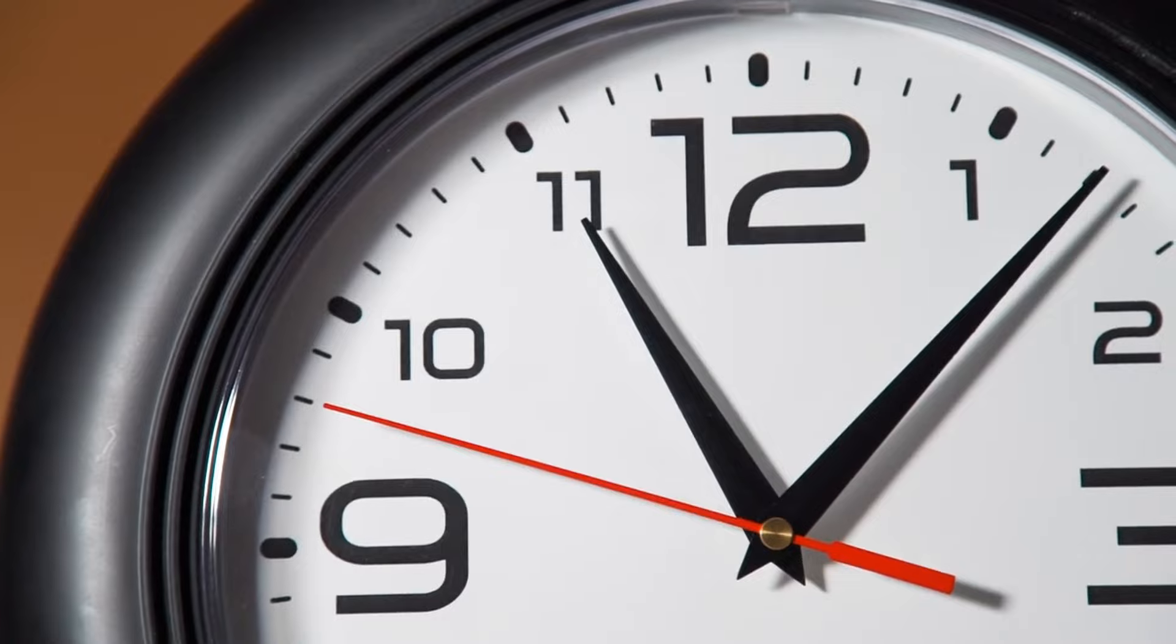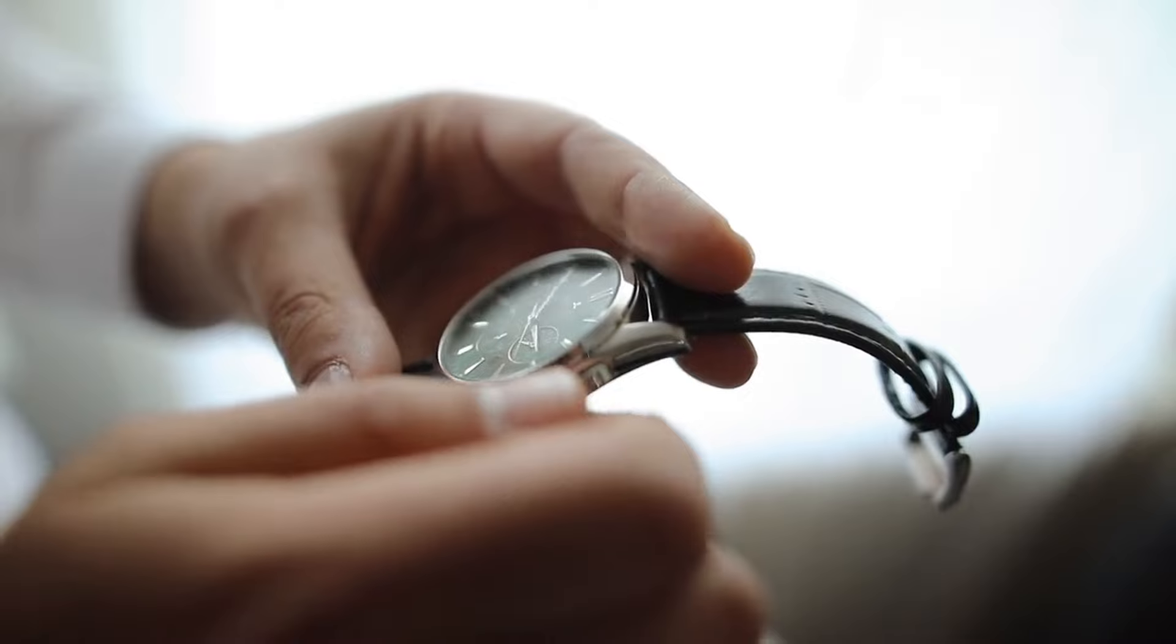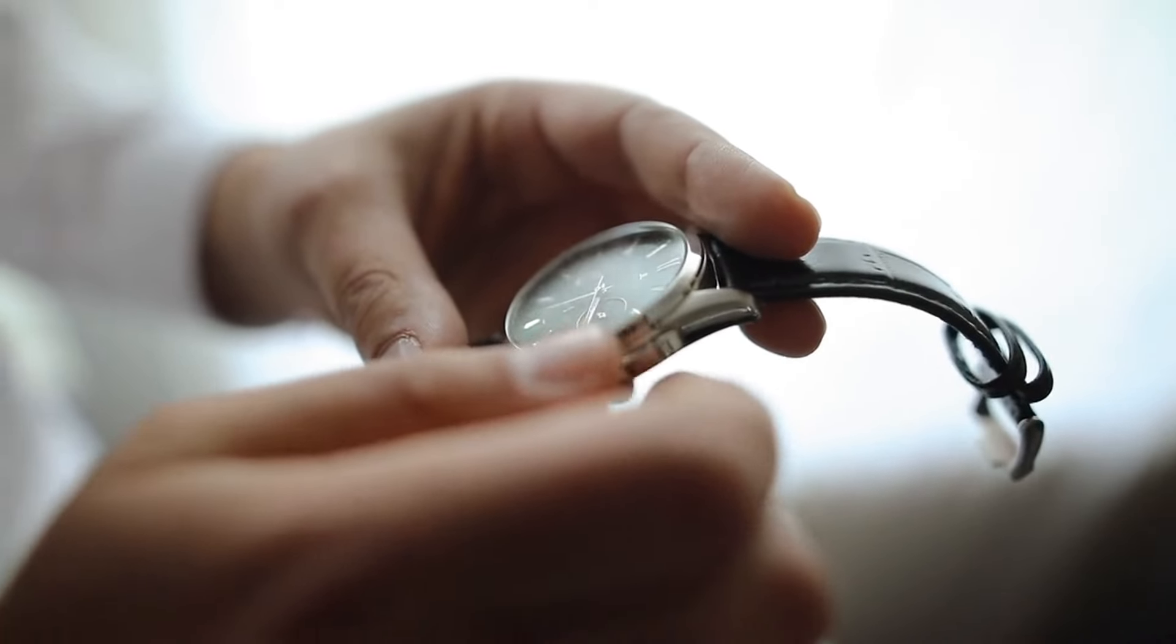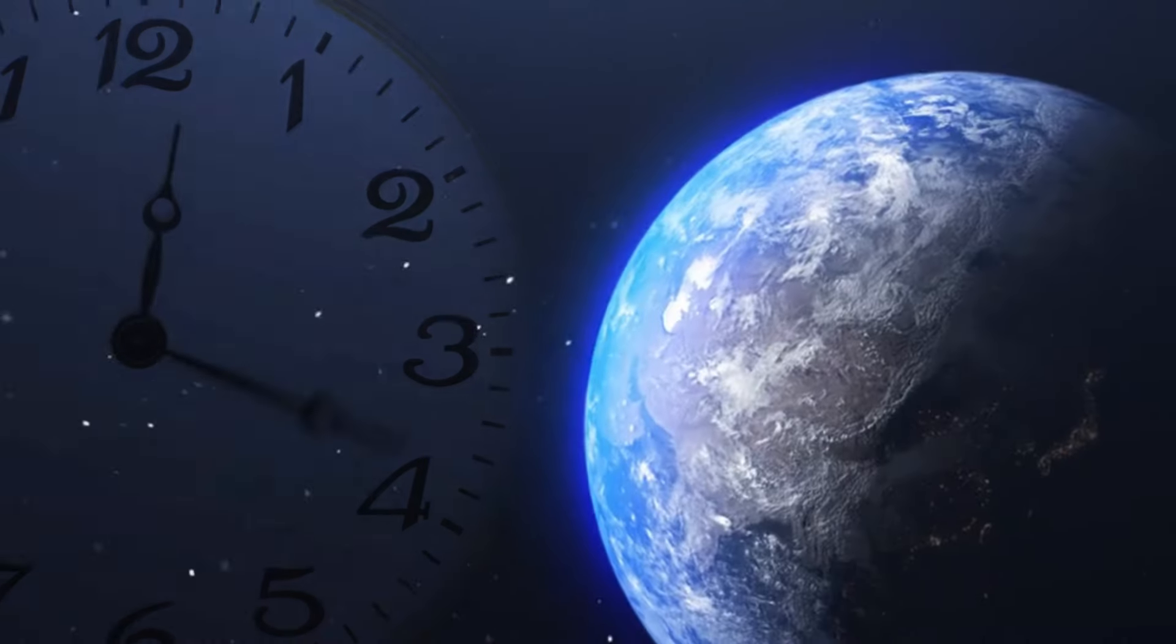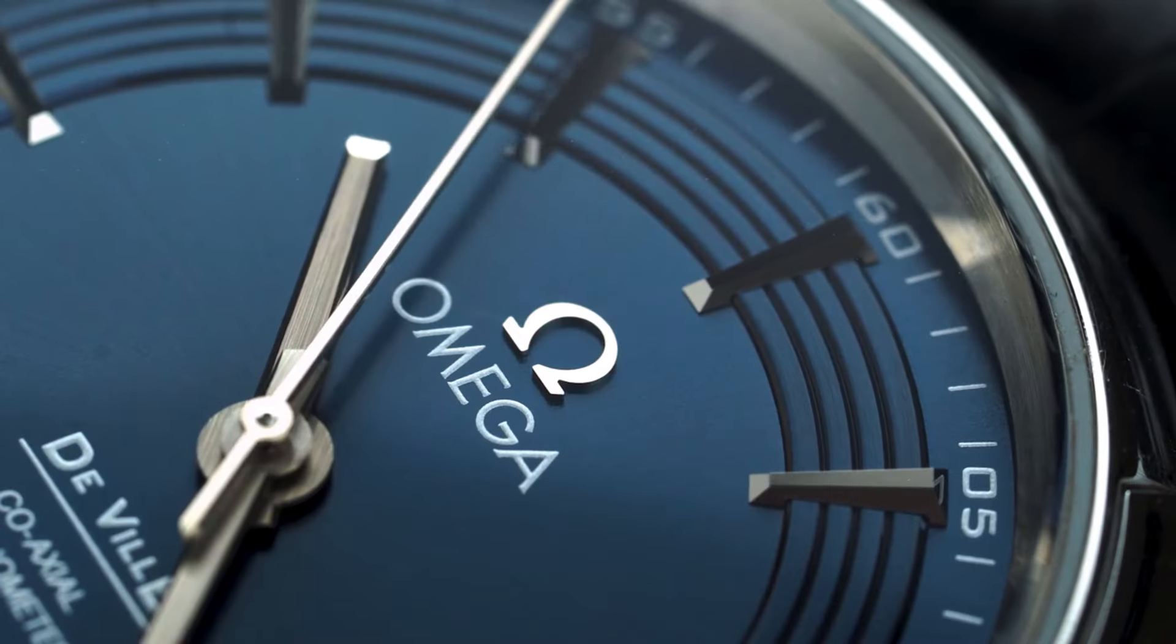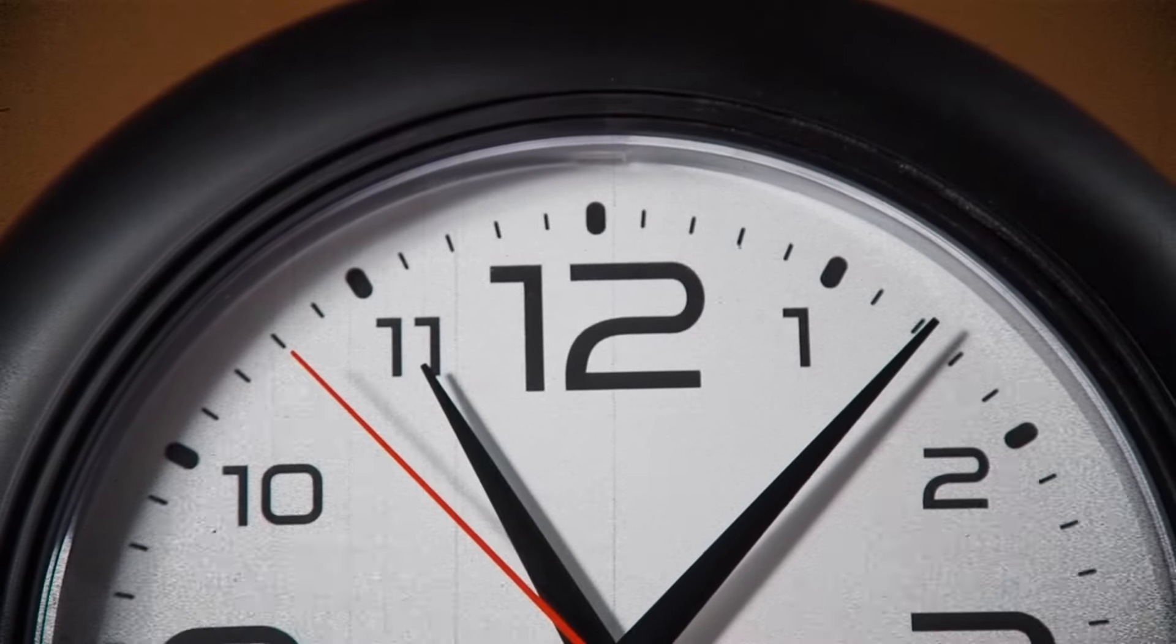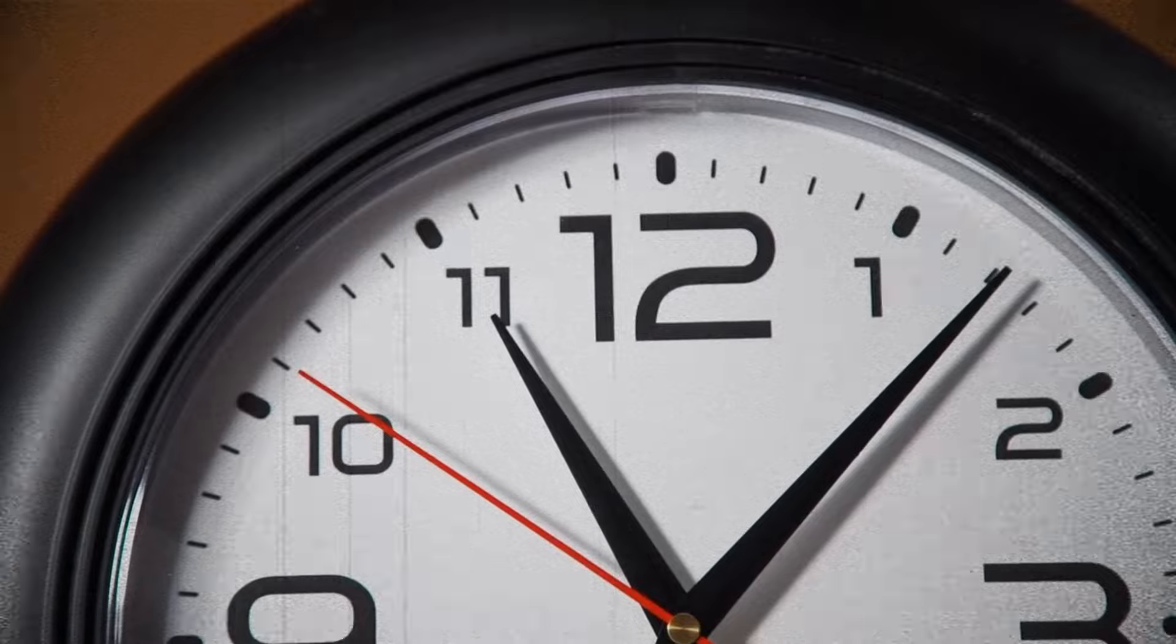The leap second is a fascinating concept that plays a crucial role in our understanding of time. It's an adjustment made to Coordinated Universal Time (UTC) to keep our clocks in sync with the Earth's rotation. Historically, we've added positive leap seconds, but now scientists are considering a negative leap second for the first time in history.